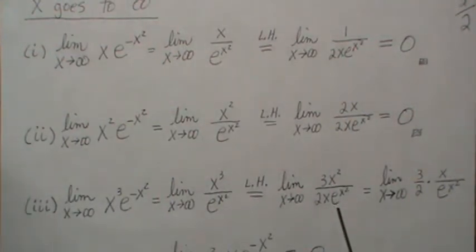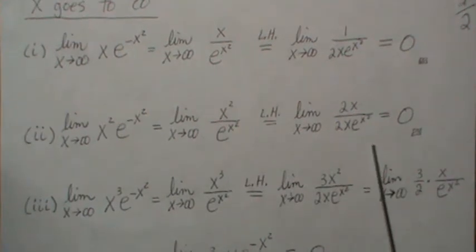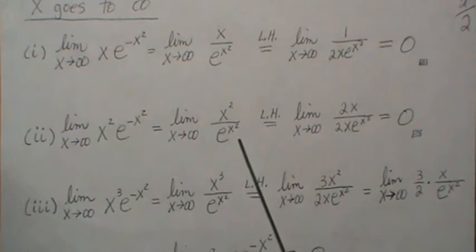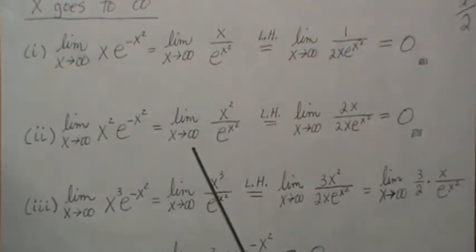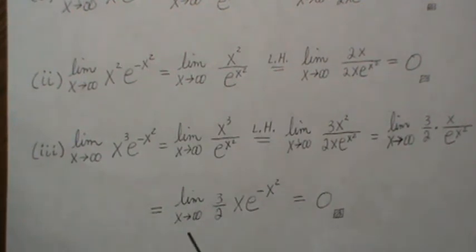Here we take the derivative and we get this, and then we cancel and we get this. Now the constant can come out front and we take the limit of this, but that's what we showed here which is zero. So this is zero anyway.